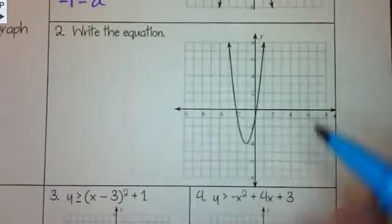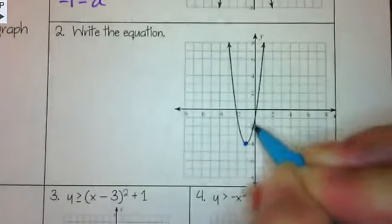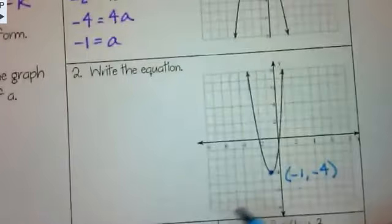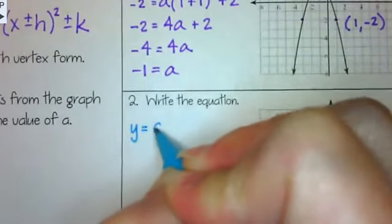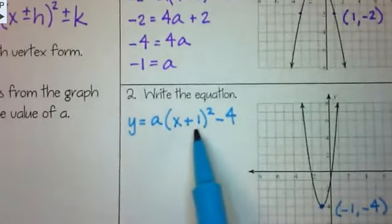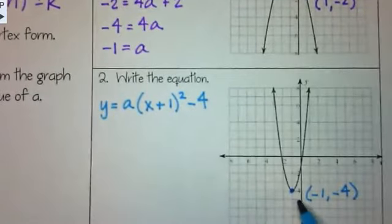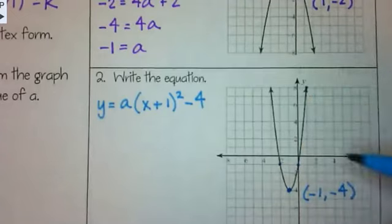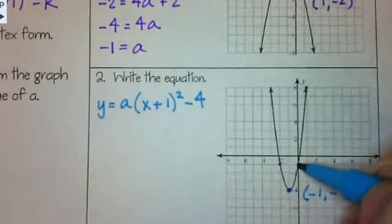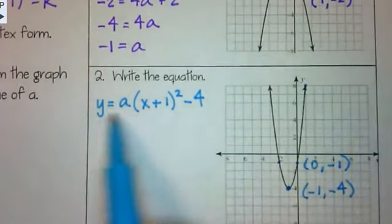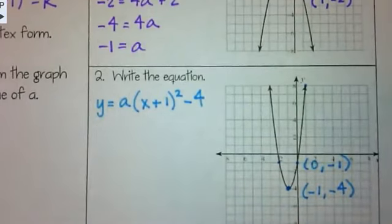Looking at this next one — I'm going to do the same thing. The vertex is right here at negative 1, negative 4. So that means y equals a times (x plus 1) squared minus 4. Looking at this, I can confirm the vertex is negative 1, negative 4, which it is on the graph. Now I'm going to look for another point. This point here is 0, negative 1 — that's an x and y I can fill in to figure out the value of a.